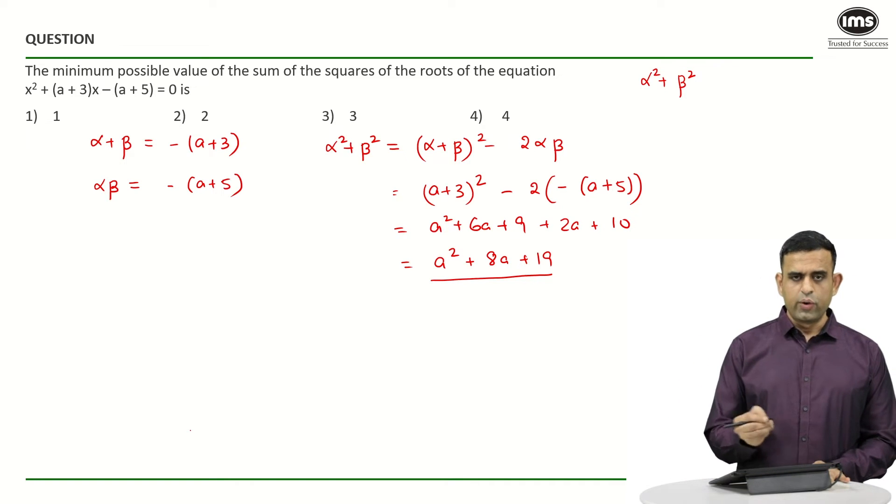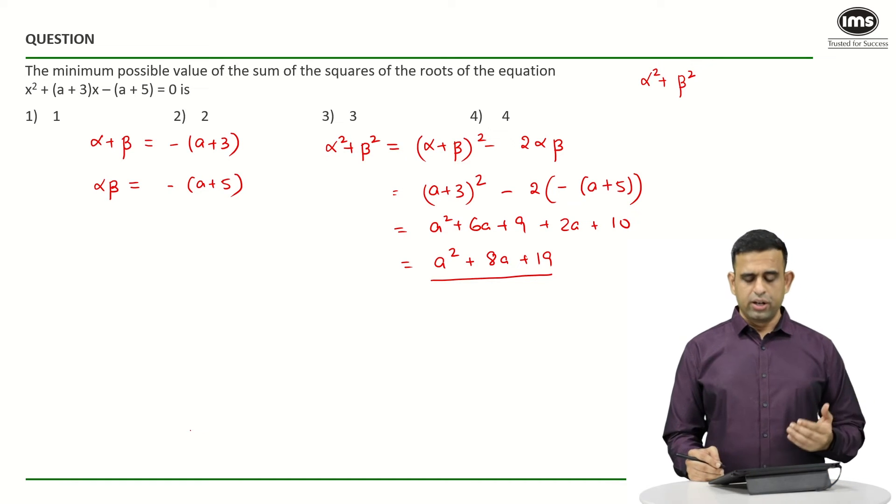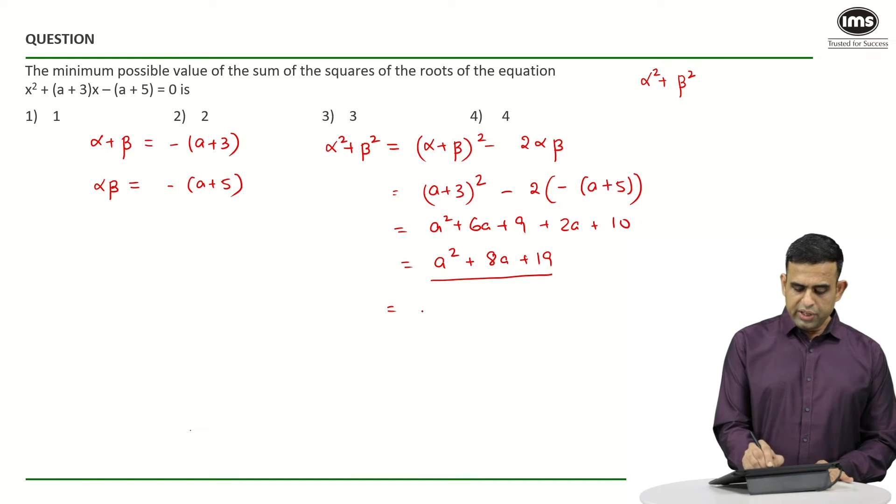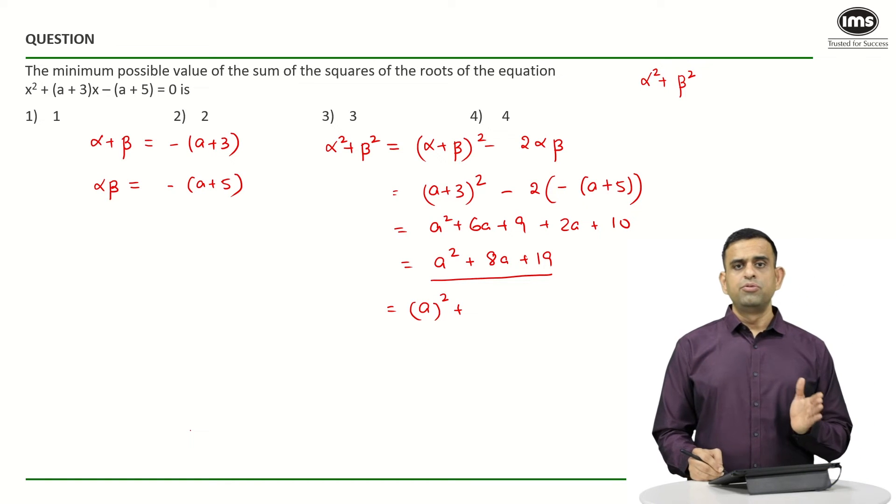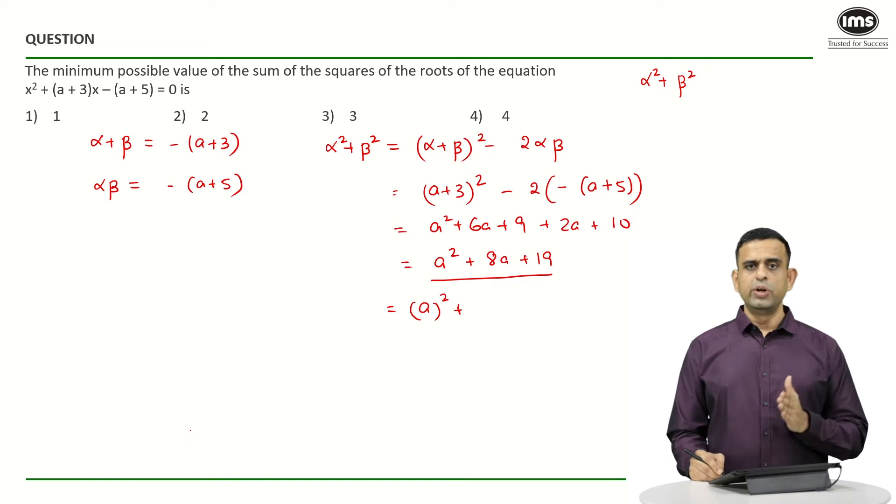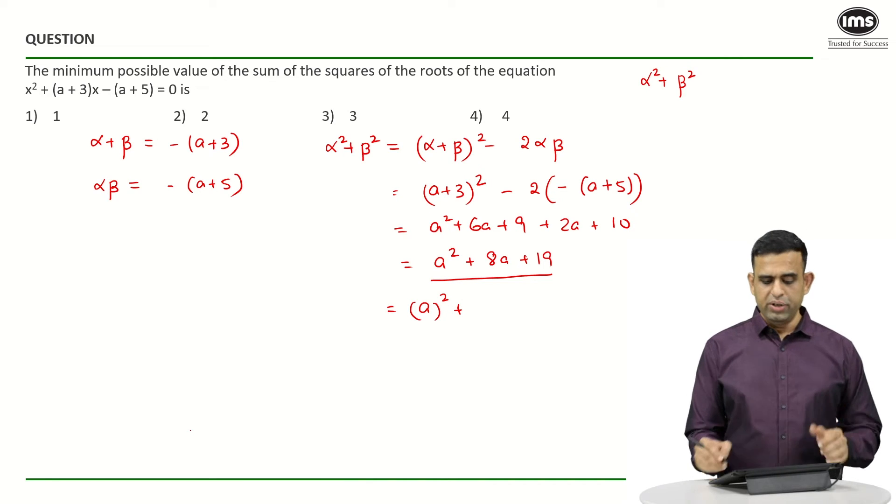So over here, if I look at the first method, if I try to use the perfect square approach, the term a² I can add as a whole square. Now the term 8a I can split as 2·a·4 since I want the term 2ab.